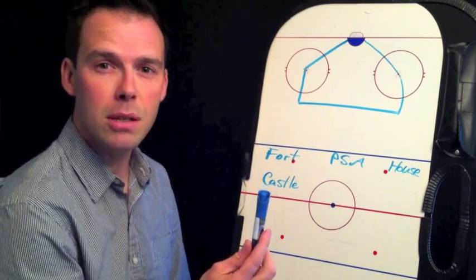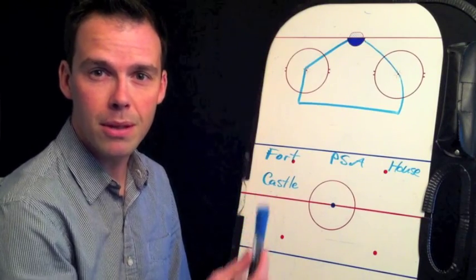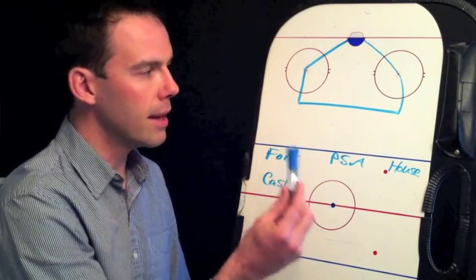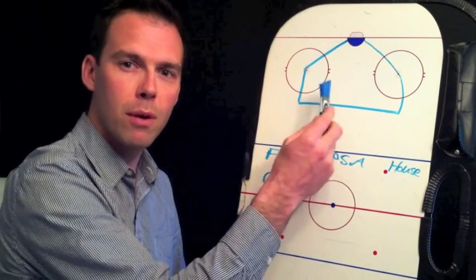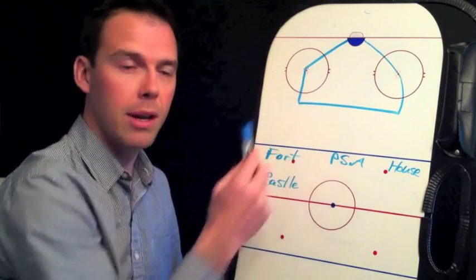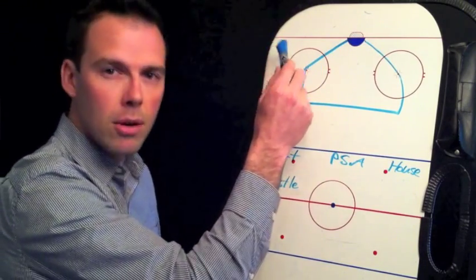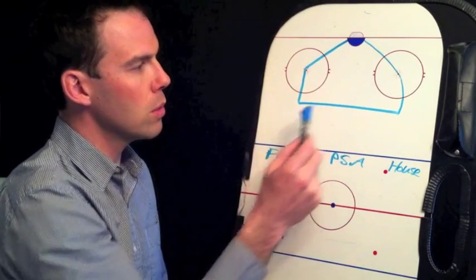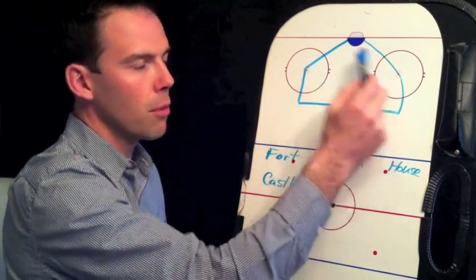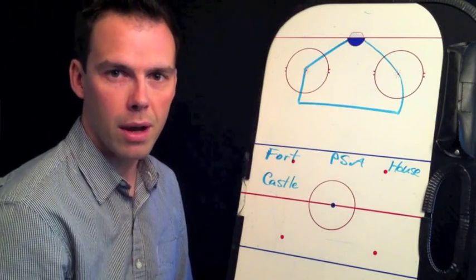It is said that 80% of goals are scored on the rebound in the top levels in the world and 80% of goals are scored from this prime scoring area. A goalie is not nearly as worried about a shot from the corner or the blue line as he or she is from inside the fort or the house.